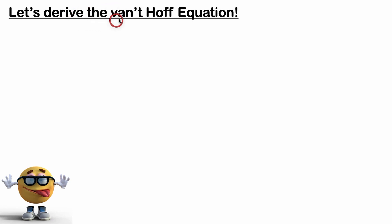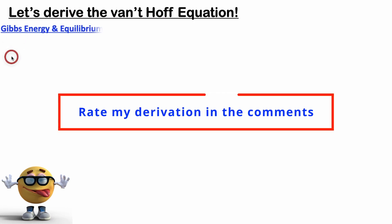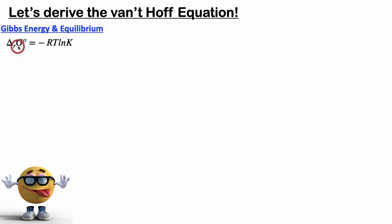Alright y'all, we're going to derive the Van't Hoff equation. I've derived this a few different ways — you can check out the other methods down below — but in this video we're going to start off with the Gibbs energy and equilibrium equation: the change in Gibbs energy ΔG° of a reaction under standard states, at a constant pressure of 1 bar, equals negative RT ln K, where K is our equilibrium constant.